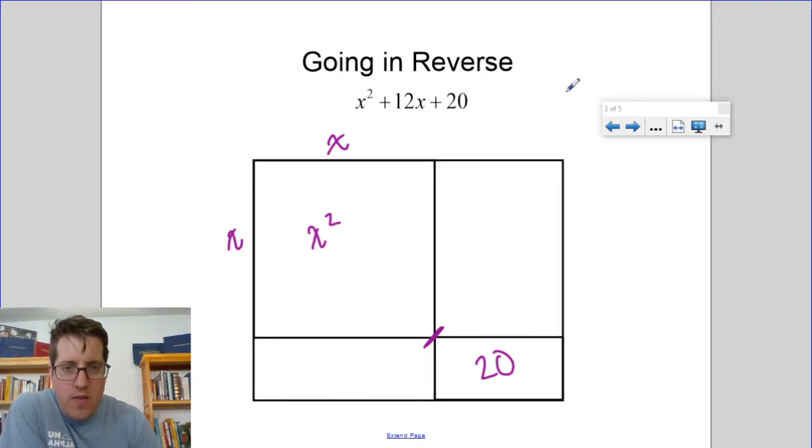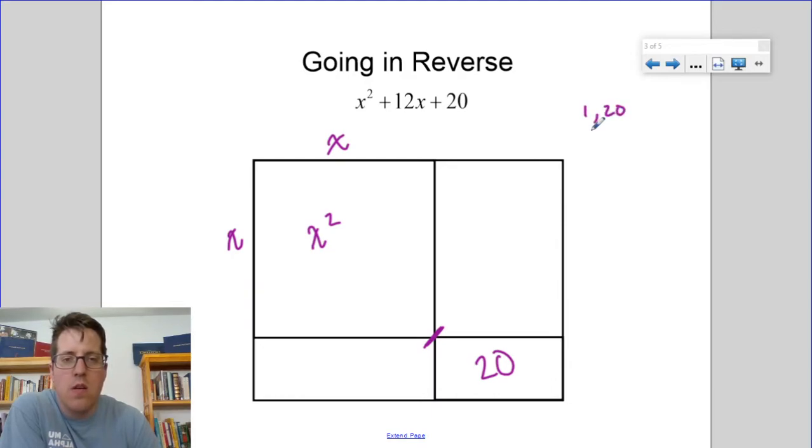Now, I need this to be 20, and I need these two to add to 12. So the different ways that I can make 20 are 1 times 20, 2 times 10, and 4 times 5. You're going to want to keep a list as you do this for each problem.